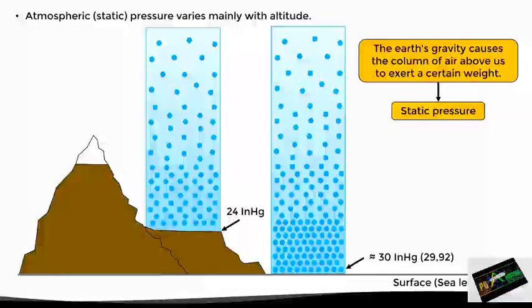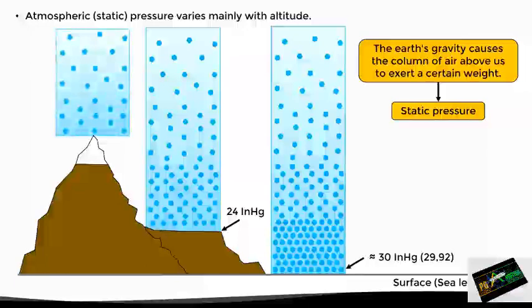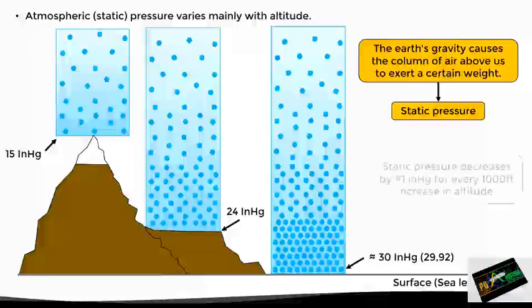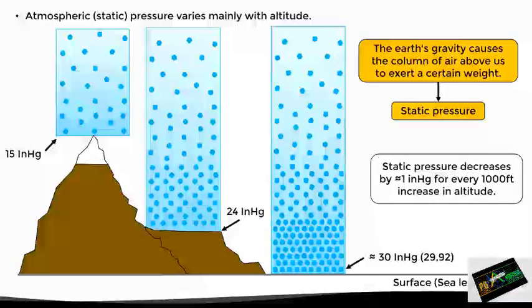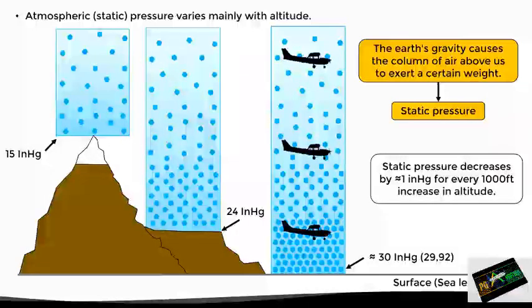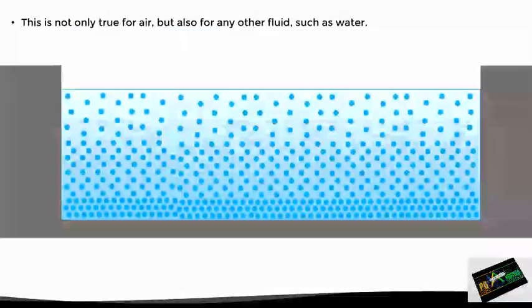If we continue climbing the mountain, we can see that the static pressure decreases more and more. At the top, for example, we can measure a pressure of 15 inches of mercury, just because we have less air above us. In general terms, we can say that the static pressure is reduced by 1 inch of mercury for every 1,000 feet of altitude increase, which means that an aircraft flying at low altitudes will experience a higher static pressure than one flying higher. And this phenomenon not only occurs with air but also with any other fluid, such as water.